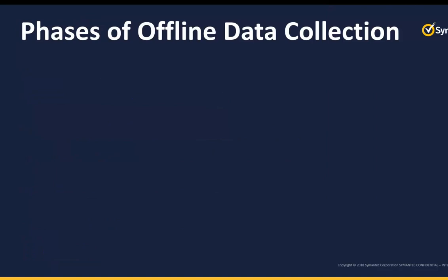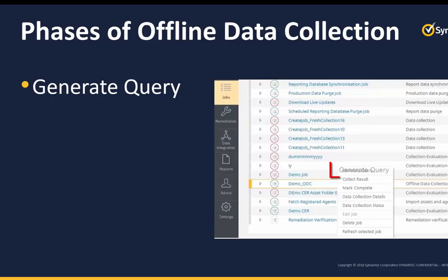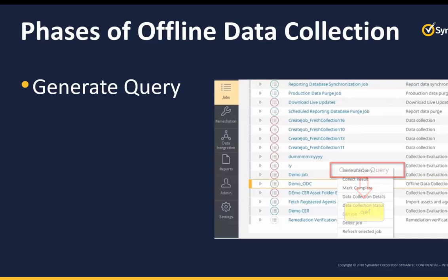Now let's understand the offline data collection or ODC job. The ODC job runs in the following three phases. The first phase is Generate Query. An ODC job runs in the generate query phase as soon as the job is created. Based on the scope of the job, queries are generated for each agent. The queries must be copied onto the respective agents. Data collection is done on each agent and an OEF results file is created. Each OEF file must be copied back to the CCS manager on which the queries were generated.